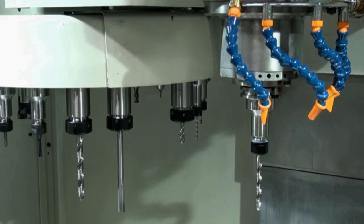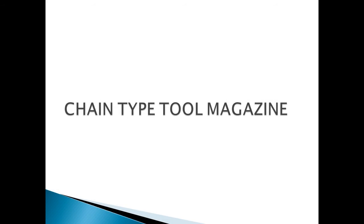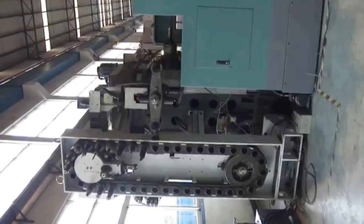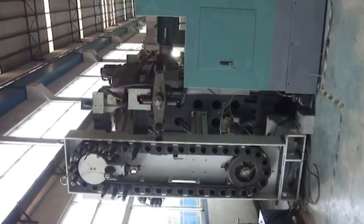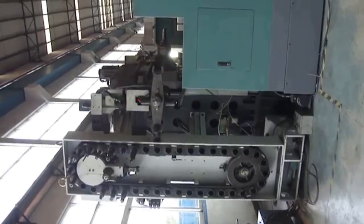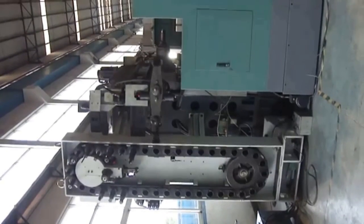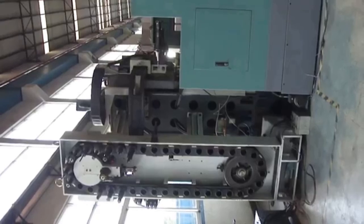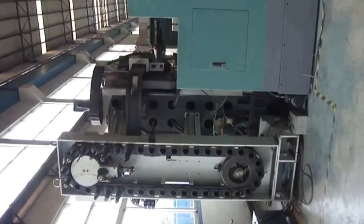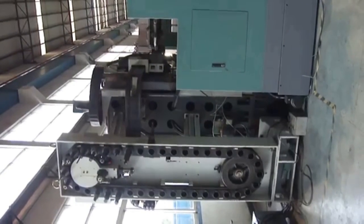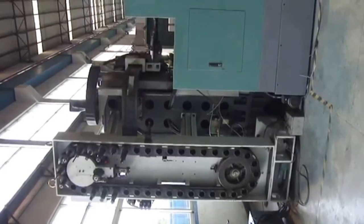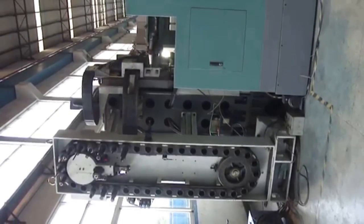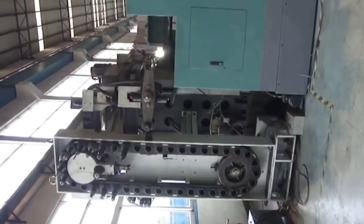Now let's see how the Chain Type Tool Changer magazine works. The tools are attached sequentially in the chain. A gripper arm takes the tool from the spindle, puts it into the correct position in the chain, then picks up the next tool and fixes it into the spindle.